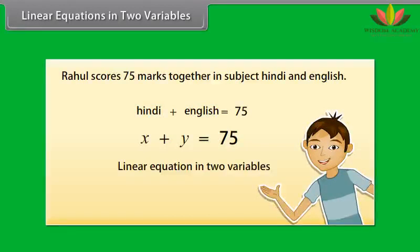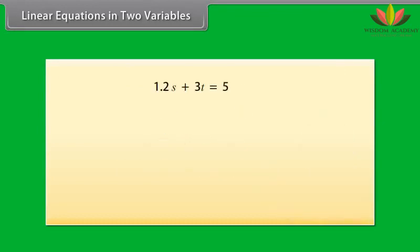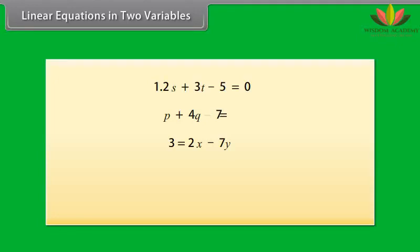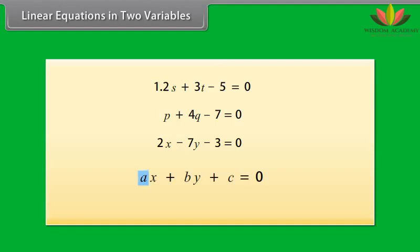This is an example of a linear equation in two variables. Other examples include: 1.2S plus 3T equals 5; P plus 4Q equals 7; and 3 equals 2X minus 7Y. These can be written as 1.2S plus 3T minus 5 equals 0; P plus 4Q minus 7 equals 0; and 2X minus 7Y minus 3 equals 0. So, any equation which can be put in the form AX plus BY plus C equals 0, where A, B, and C are real numbers and A and B are not both zero, is called a linear equation in two variables.